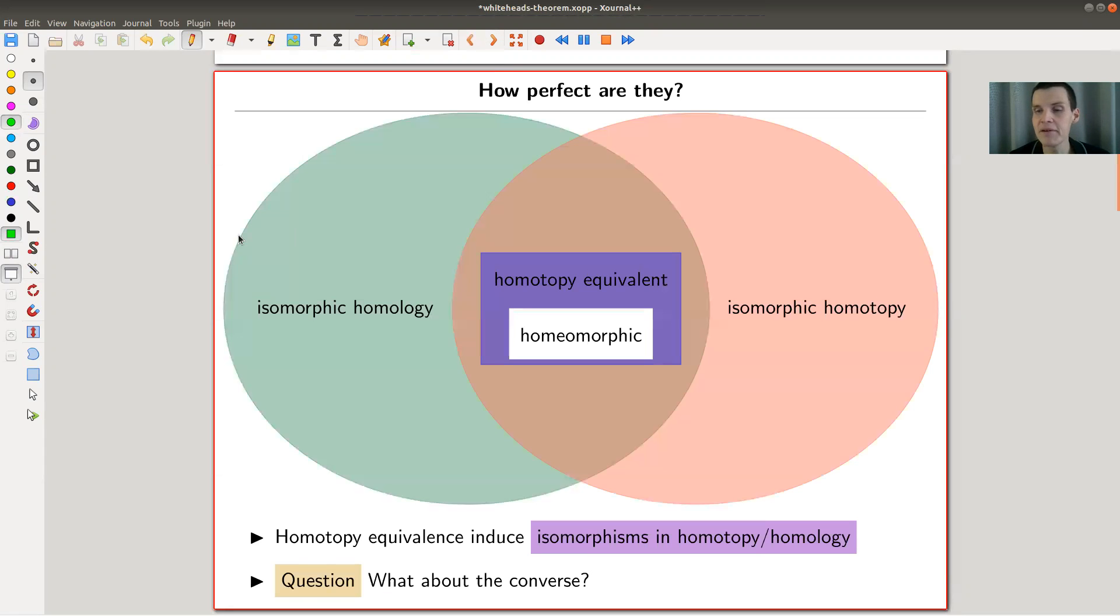So here's the setup. We are interested in homotopy equivalent spaces or to detect homotopy equivalents. We are interested in detecting homeomorphisms. So kind of this little blue box in the middle here, or the corresponding white box.